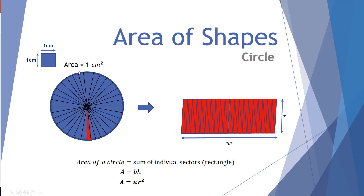The other half of the circumference forms the top edges of the remaining sectors. So this almost-rectangle has base πr and height r. Multiplying πr by r gives an area of πr squared. We'll watch a video now demonstrating this.